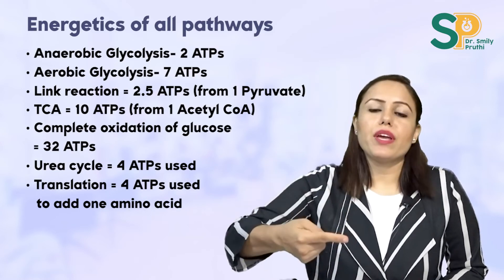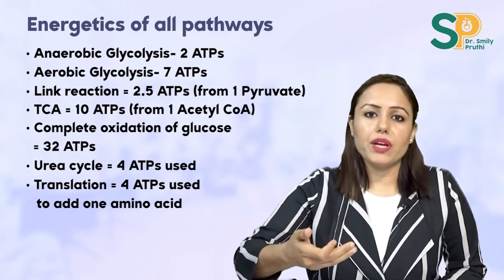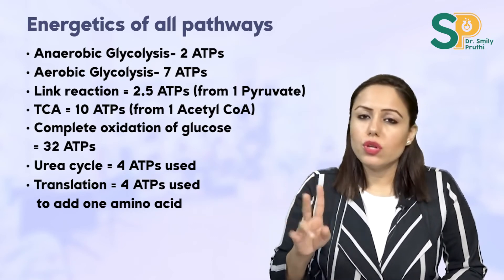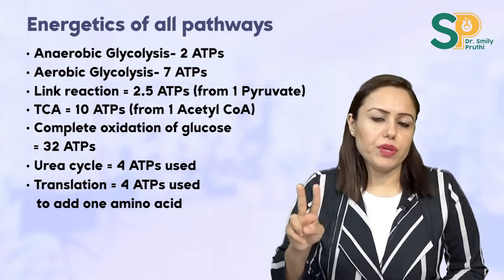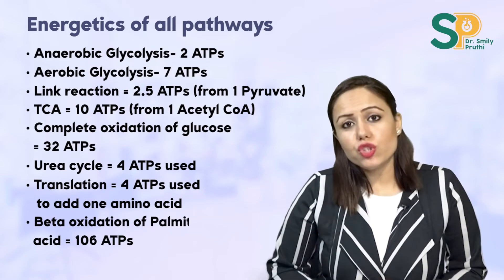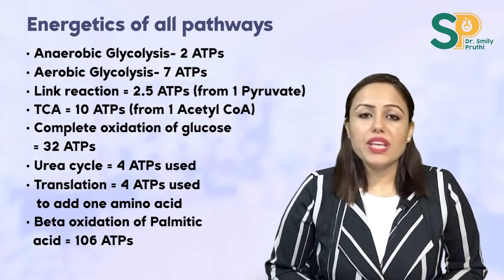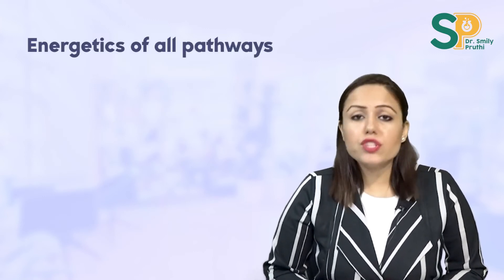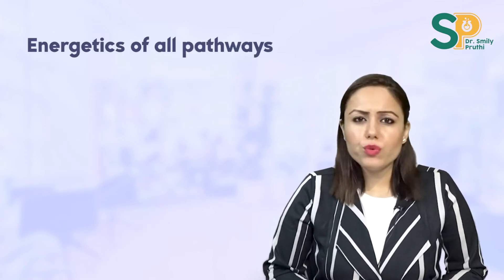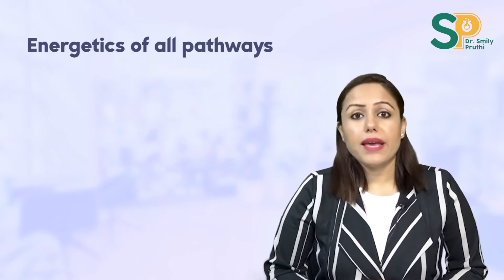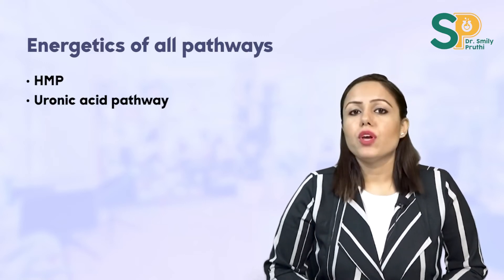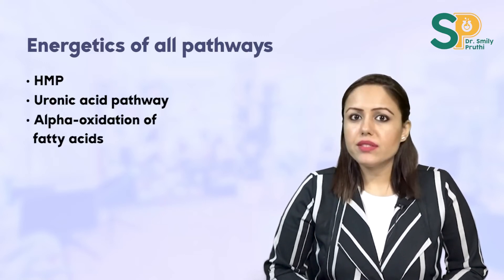In protein synthesis (translation), to add one amino acid to the growing polypeptide chain, four high-energy bonds are used — 2 ATP and 2 GTP. In beta-oxidation of palmitic acid, 106 ATPs are produced. Pathways that produce no ATP: HMP pathway, uronic acid pathway, alpha-oxidation of fatty acids, very long chain fatty acid oxidation, and the HMP shunt.